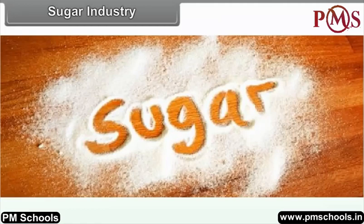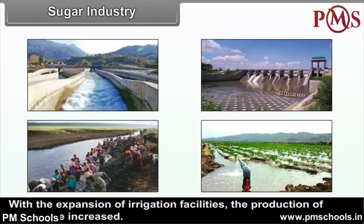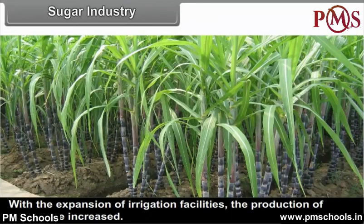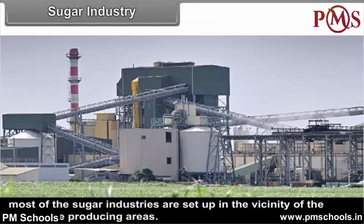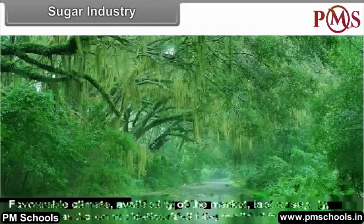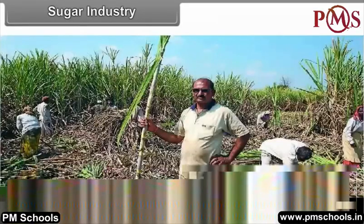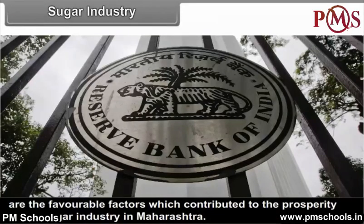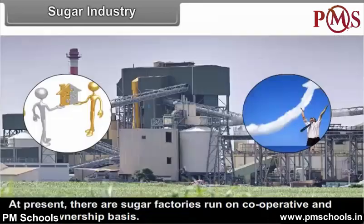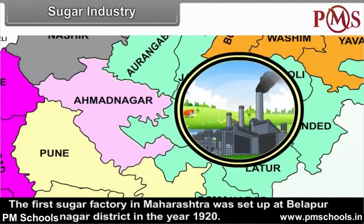With the expansion of irrigation facilities, the production of sugarcane increased. As sugarcane is perishable and loses its weight and sucrose content quickly after cutting, most of the sugar industries are set up in the vicinity of the sugarcane producing areas. Favourable climate, availability of the market, labour supply, transport and communication facilities, and availability of capital are the favourable factors which contributed to the prosperity of the sugar industry in Maharashtra. There are sugar factories run on cooperative and private ownership basis.